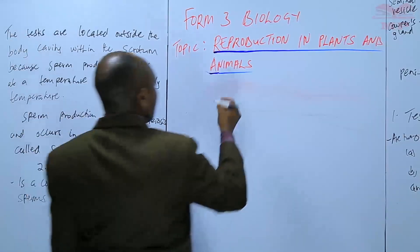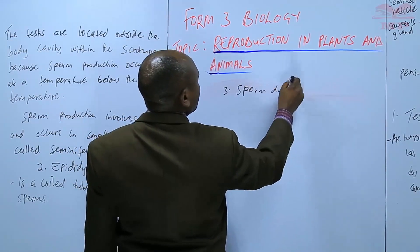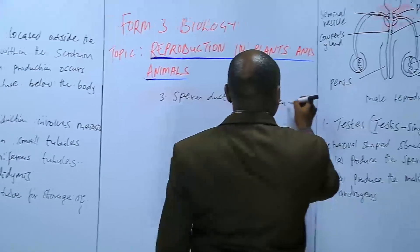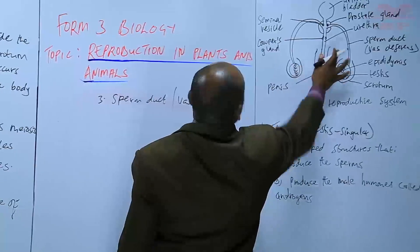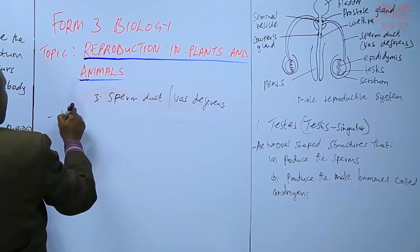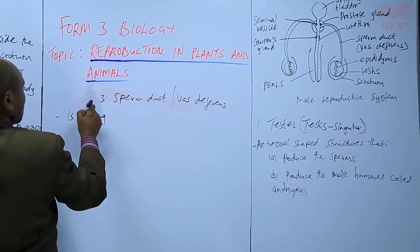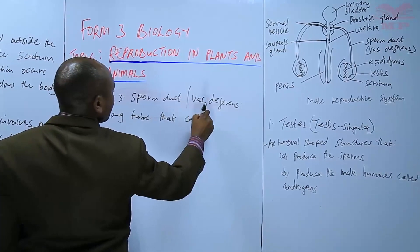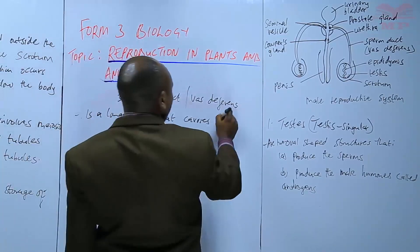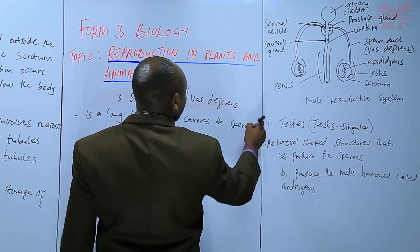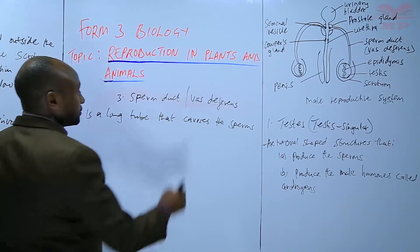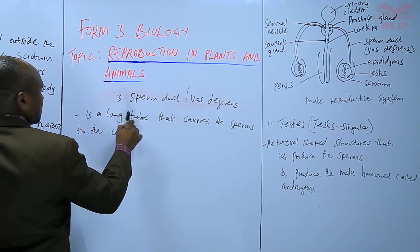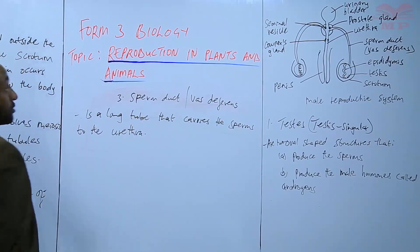Next is the sperm duct, also known as the vas deferens. This is a long tube that carries the sperms to the urethra.